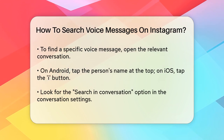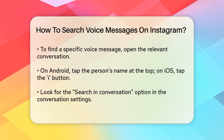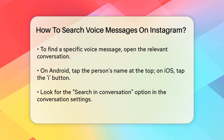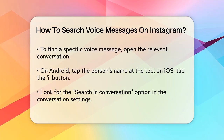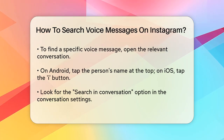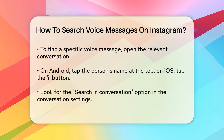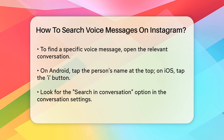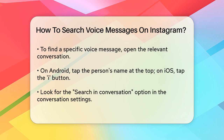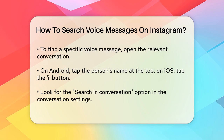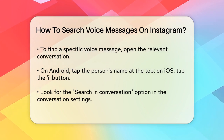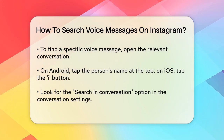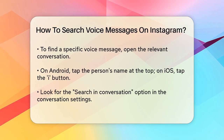To search for a specific message, including voice messages, you need to open the conversation where the voice message is located. On Android, tap the person's name at the top of the chat, and on iOS, tap the I button at the top right corner. Under the conversation settings or actions, you'll find the option to search in conversation. Tap this to open a search box within the chat.